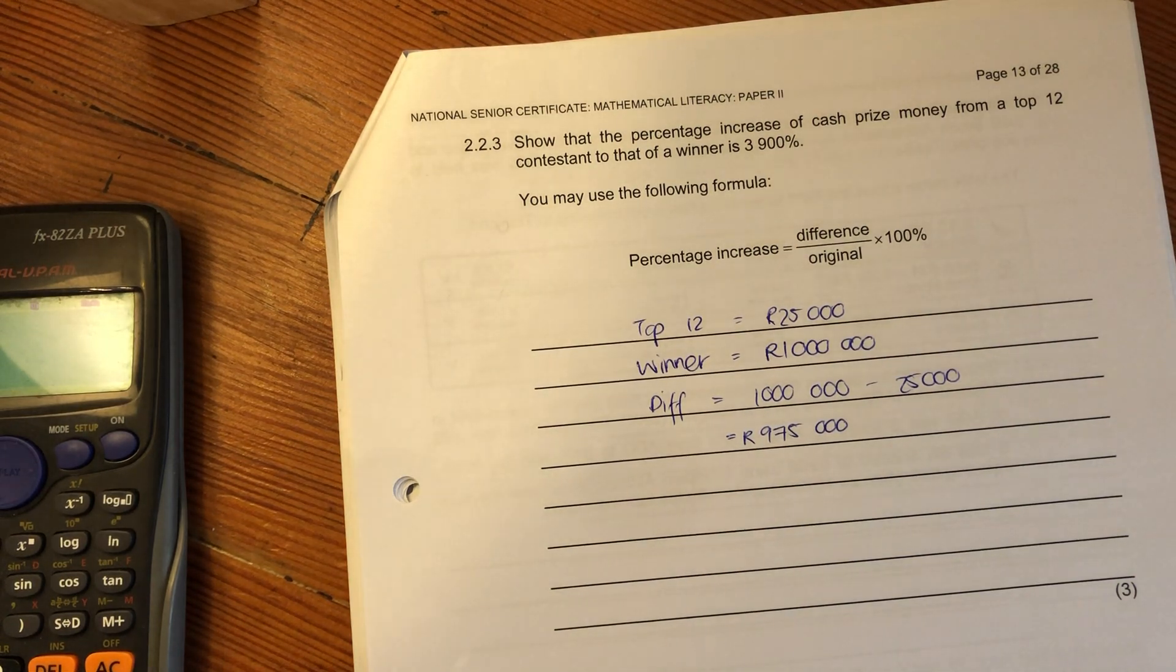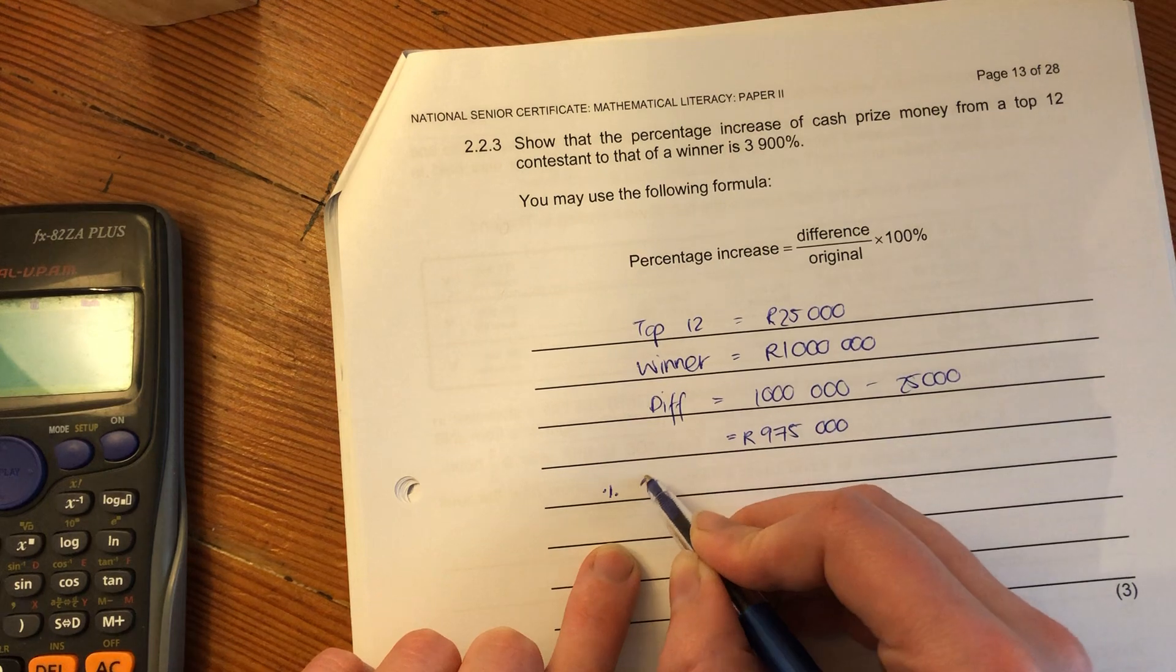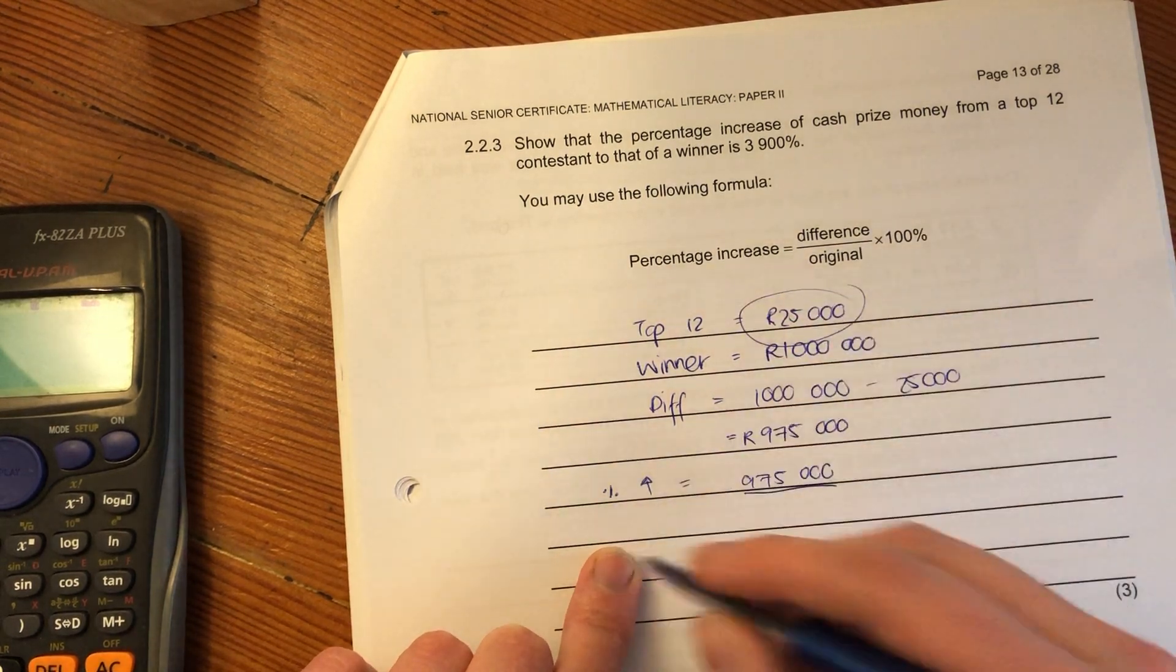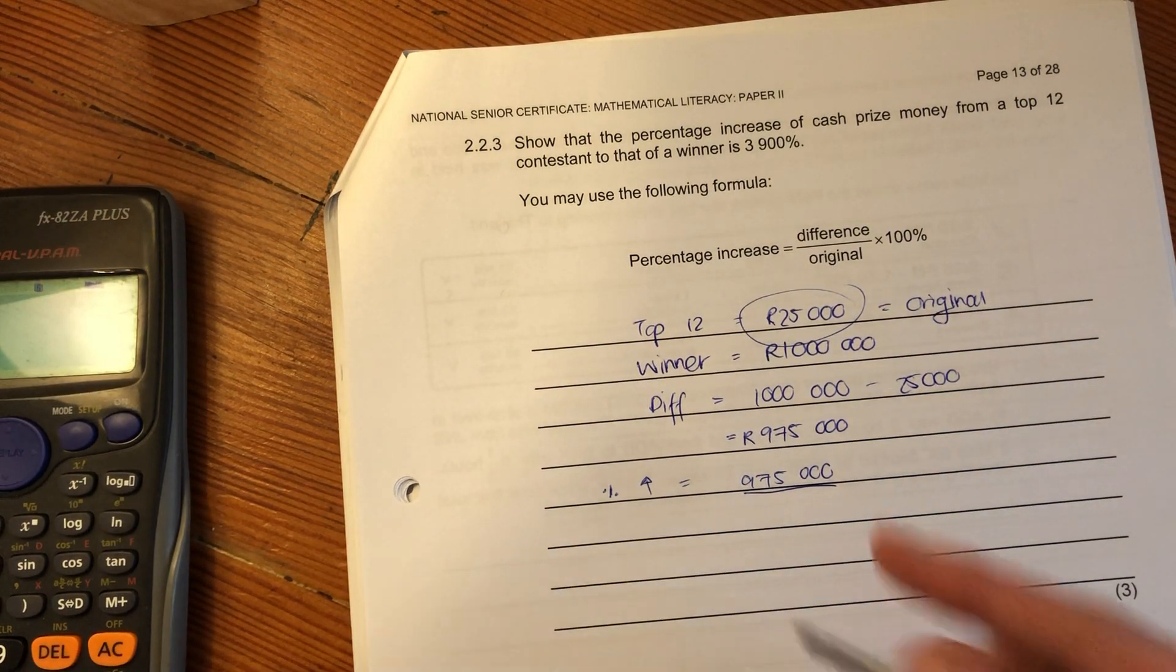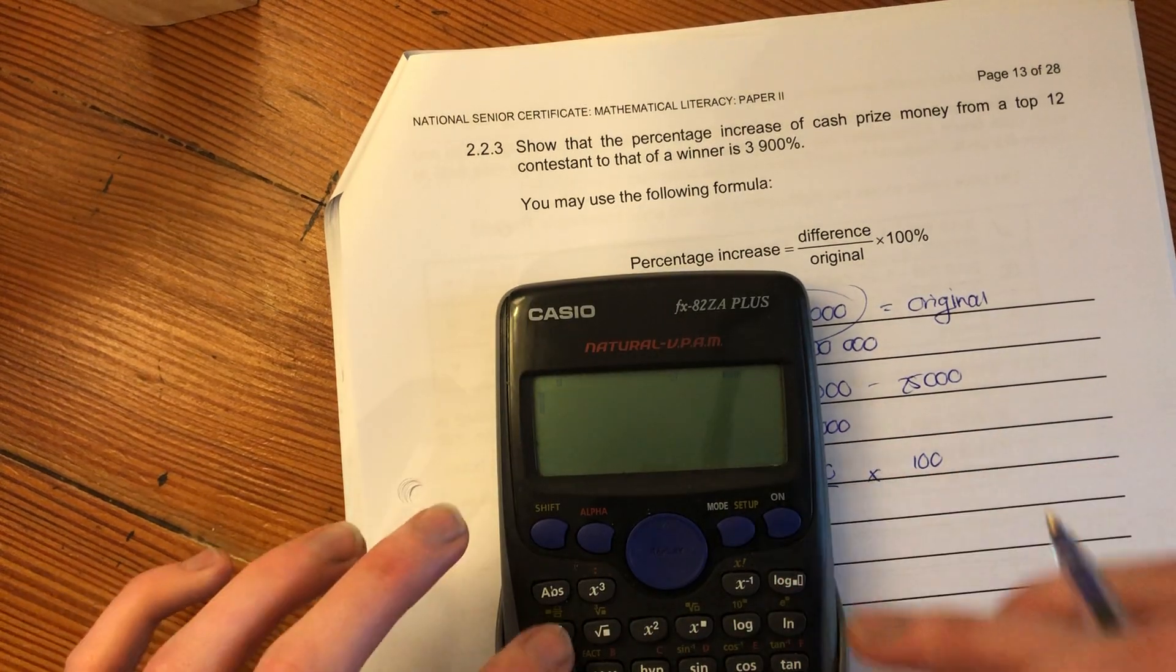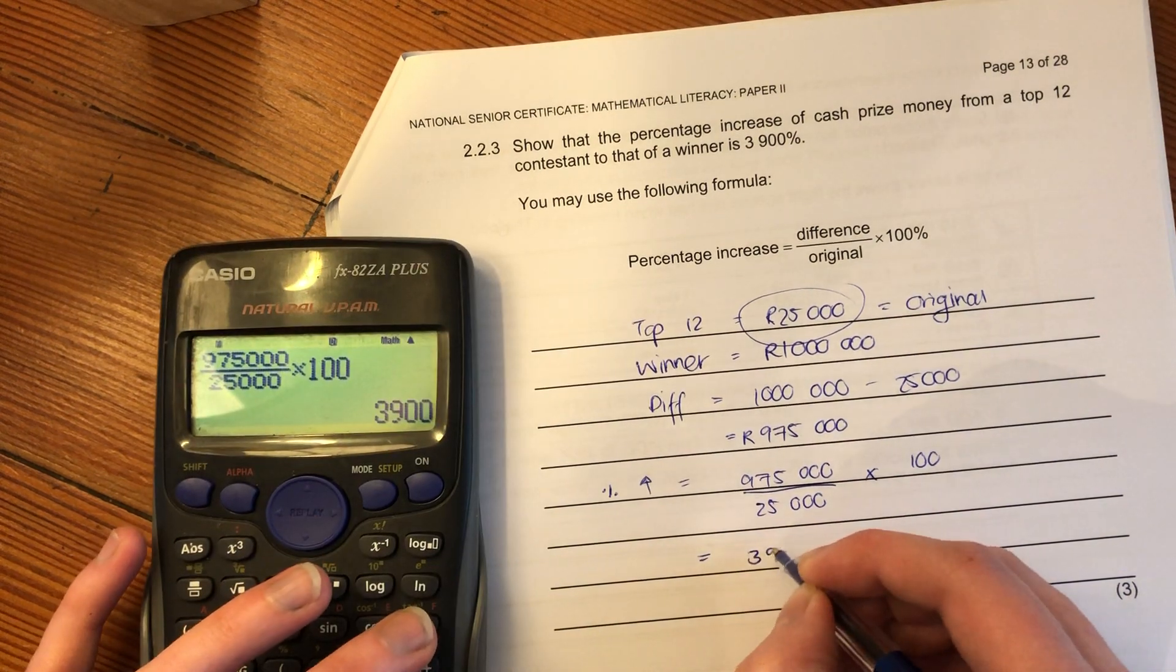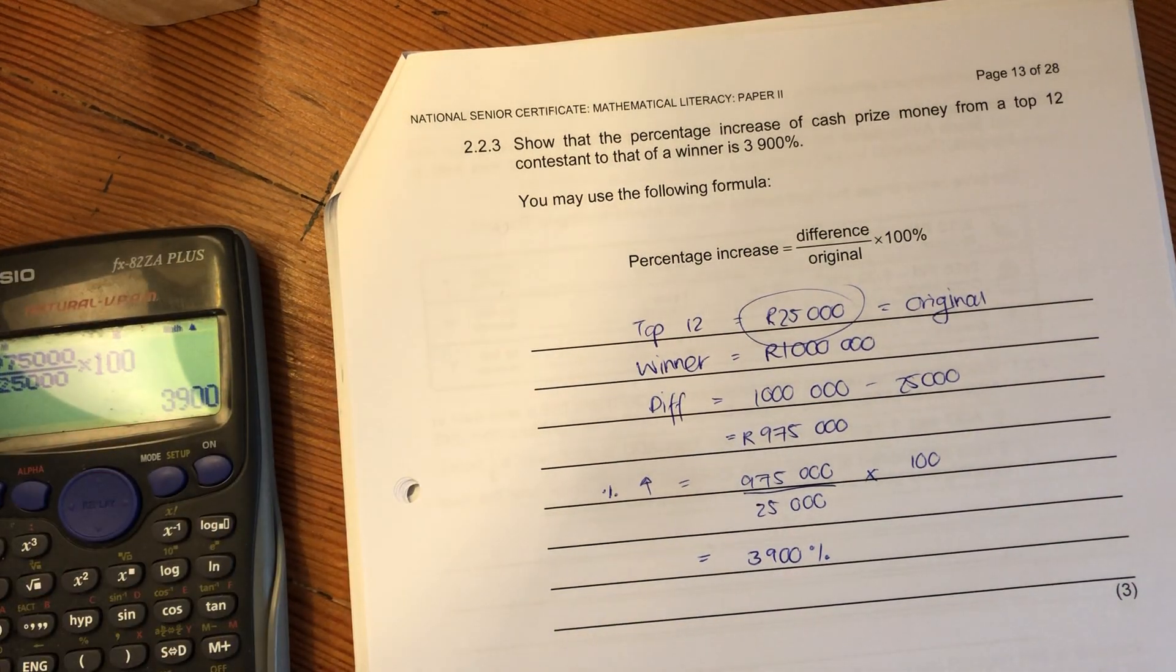We know that our percentage increase is our difference, which is 975,000, over our original. What was the original? We're comparing it to the top 12, so 25,000, times by 100. Let's put that into our calculator: 975,000 divided by 25,000 times 100. That gives us exactly 3,900%, the percentage we wanted. This was just understanding what was being asked and putting it into maths.